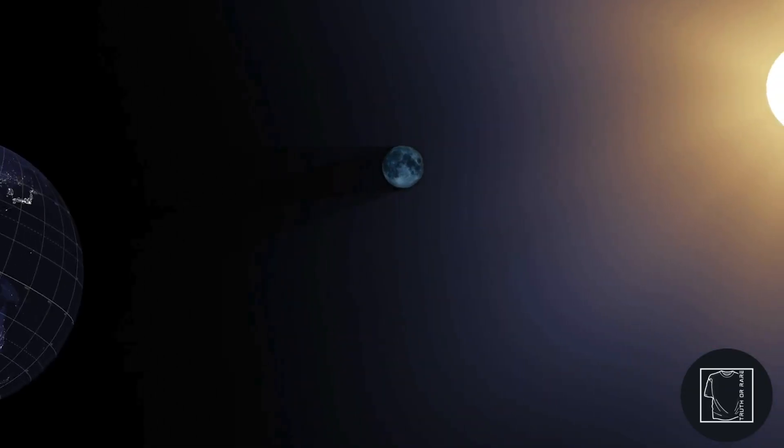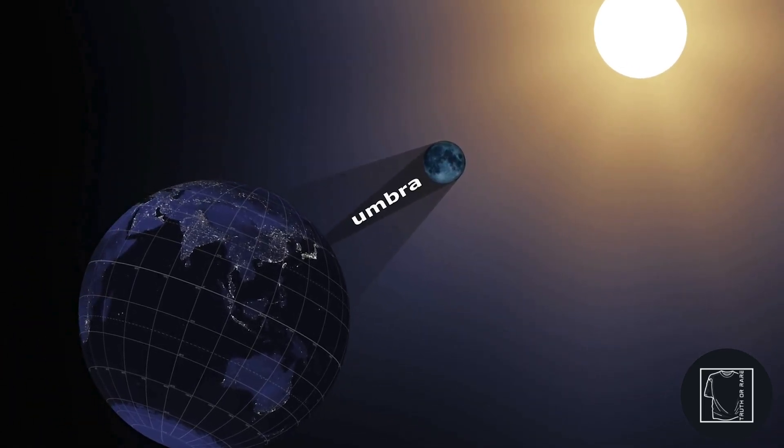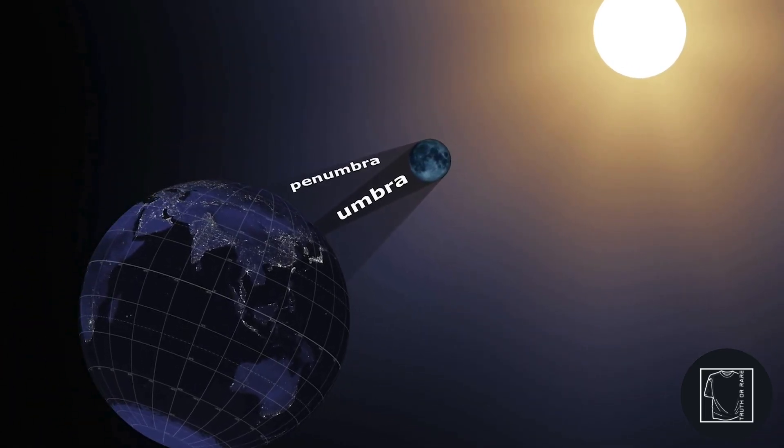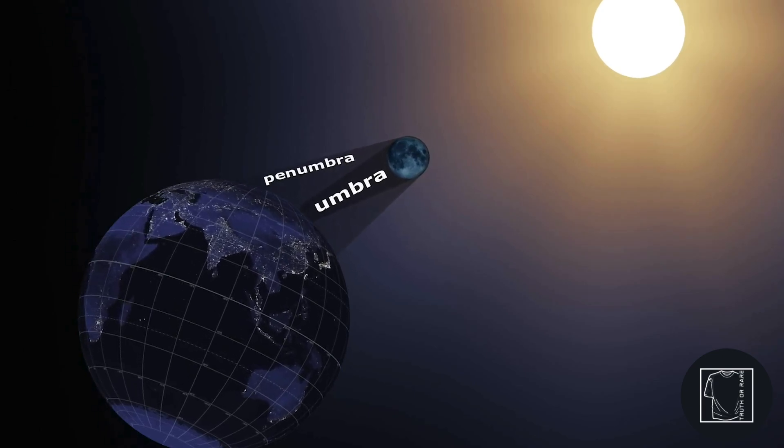During a solar eclipse, the moon casts a shadow with two parts, the umbra and penumbra. The moon's umbra is part of the moon's shadow where the entire Sun is blocked by the moon.